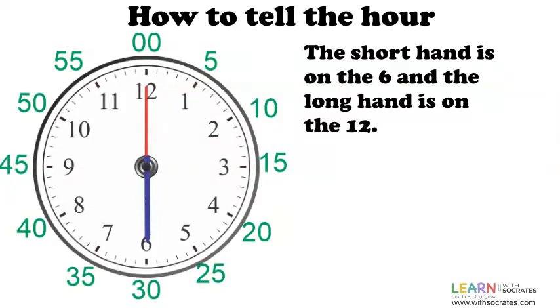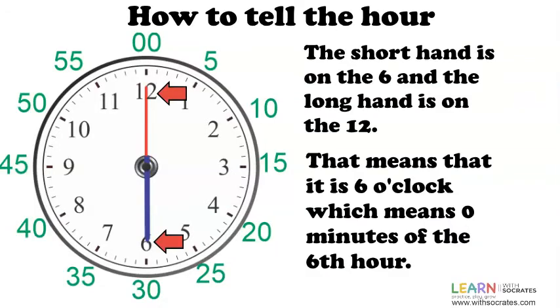How to tell the hour. The short hand is on the six and the long hand is on the 12. That means it is six o'clock, which means zero minutes of the six hour.